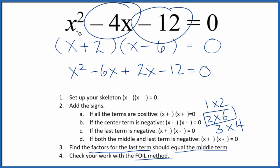Here's our 12x, and we have x squared. So this is the same thing we started with. We correctly factored x squared minus 4x minus 12.